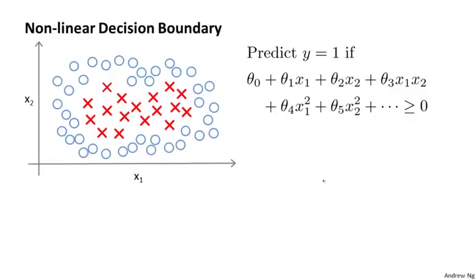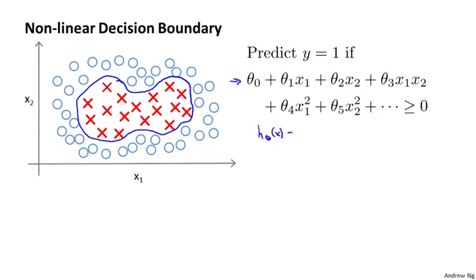If you have a training set that looks like this and you want to find a nonlinear decision boundary to distinguish the positive and negative examples, maybe a decision boundary that looks like that. One way to do so is to come up with a set of complex polynomial features, so that you end up with a hypothesis that predicts one if theta zero plus theta one x one plus dot dot dot, all those polynomial features, is greater than zero, and predict zero otherwise.